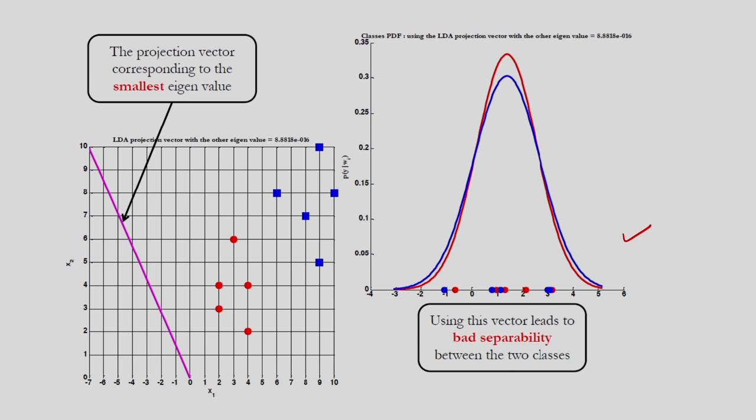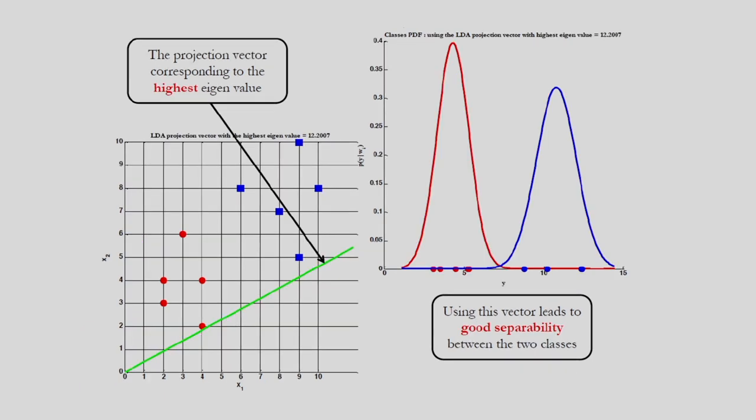I have to consider the largest eigenvalue and the corresponding projection direction. Here you can see I am considering the largest eigenvalue and the corresponding green colored projection direction — corresponding to this I am getting good separability between the samples of two classes. That you can see from this plot as well — you obtain good separation between the samples of the two classes.